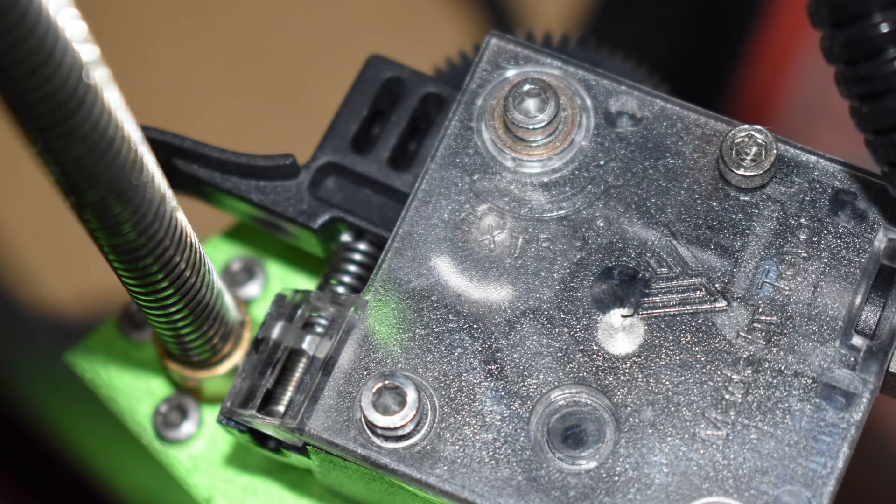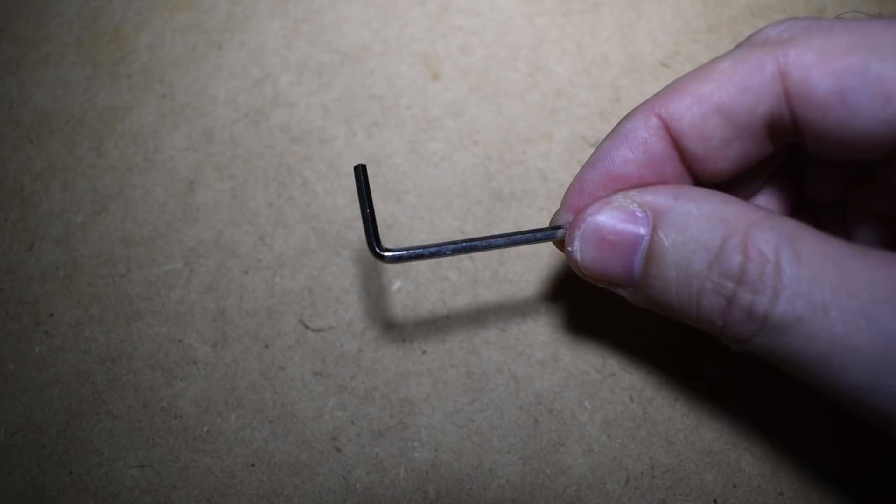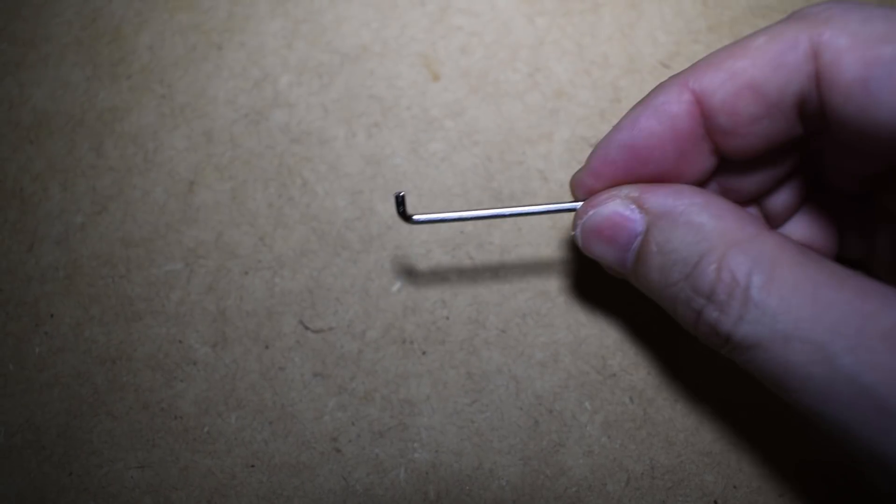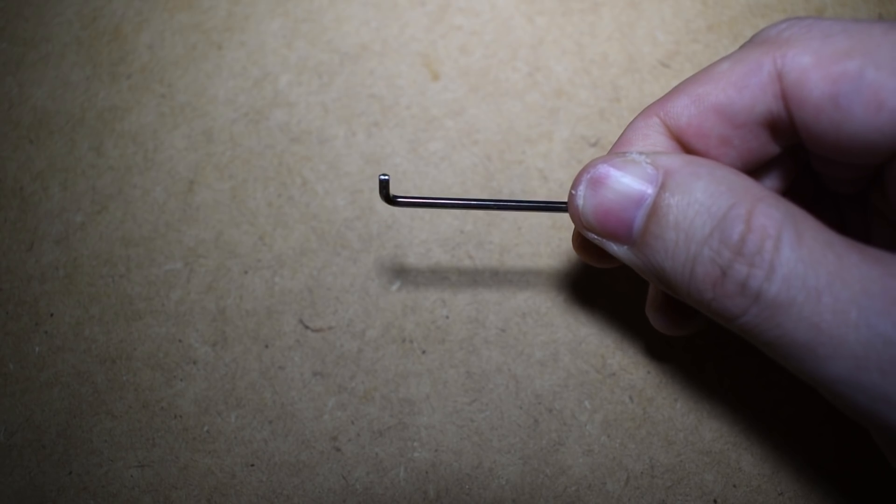The tension screw is not easy to reach, so you have a couple of options. The first option is you can take the extruder out by unscrewing all the screws on the top. Or, do as I did and get one of the Allen keys that came with the printer and cut off the short side of it. You can easily do it with a metal saw.